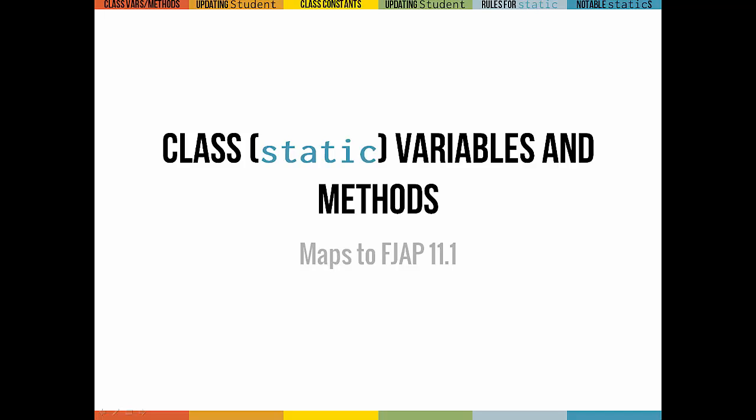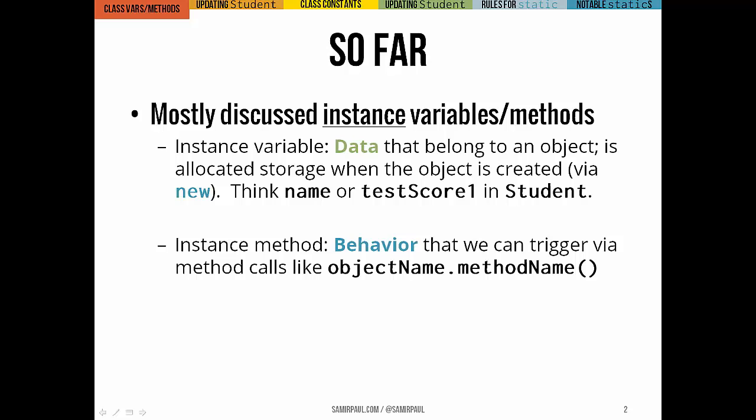We'll start by discussing class variables — static variables and methods — which we've seen before but will review quickly. So far, mostly what we've discussed have been instance variables and methods. An instance variable belongs to an object and gets storage as soon as the object is created. Every object has its own set of instance variables, and an instance method gets activated when we call it by sending a message to the object.